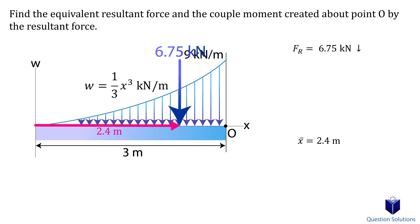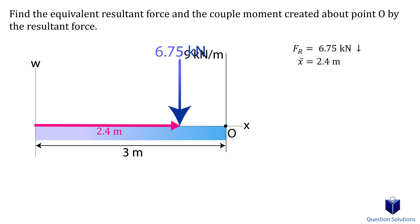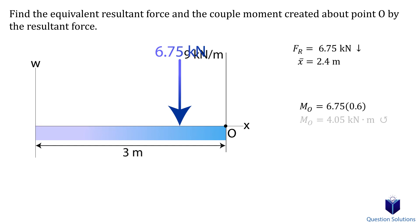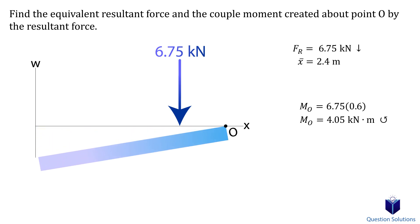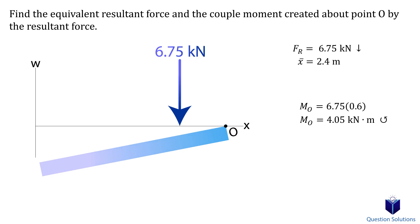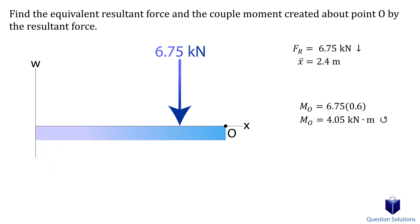The question asks us to find the moment about point O, which means we need the distance from point O to the resultant force — and that's 0.6 meters. Now we can find the moment by multiplying the distance by the resultant force. If the bar was able to move freely, the resultant force would create a counterclockwise movement, so our moment is counterclockwise. This tells us the moment created about point O from the distributed load.